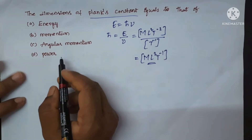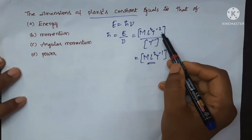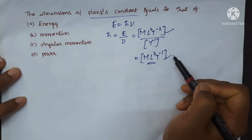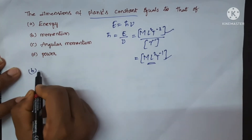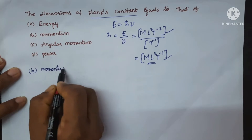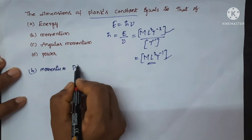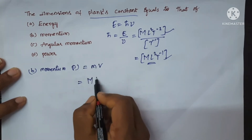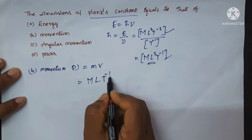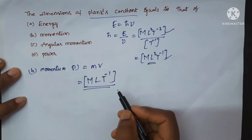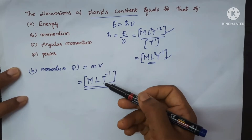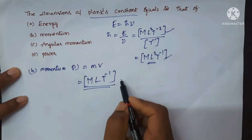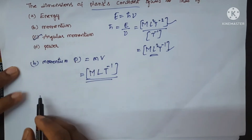Which gives M L square T power minus 1. This is the dimensional formula for Planck's constant. For the first option, energy is M L square T power minus 2 — both are different. For B, momentum: formula P is equal to mass multiplied by velocity. Dimension formula is M into L T power minus 1. This is also different from Planck's constant.